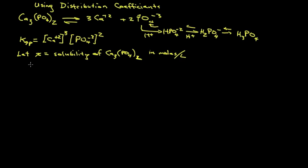So let's try to write the calcium concentration in terms of X. For every mole of formula units of calcium phosphate to dissolve, we get three calcium ions. So calcium ions are going to be 3 times X.